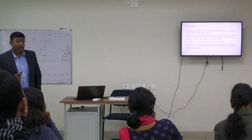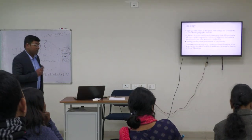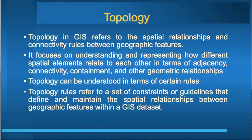Here comes the topological relationship — the spatial relationship. Topology in GIS refers to spatial relationships such as connectivity, contiguity, and proximity. To understand topology, it basically focuses on how different spatial elements are related to each other in terms of adjacency, connectivity, containment, or other geometric relationships.